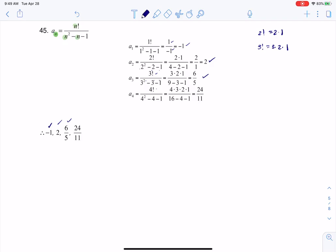And last but not least, a sub 4, we've got 4 factorial, 4 squared minus 4 minus 1. And again, 4 factorial, that would be 4 times 3 times 2 times 1, which is 24. And then my denominator simplifies to 11, and there are my 4 terms.